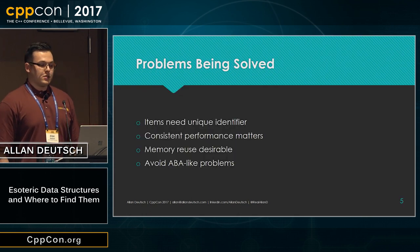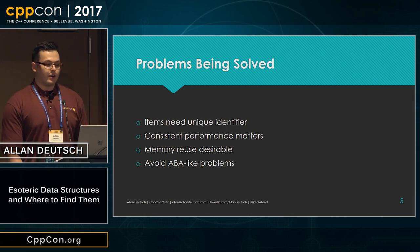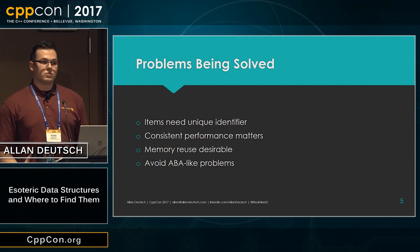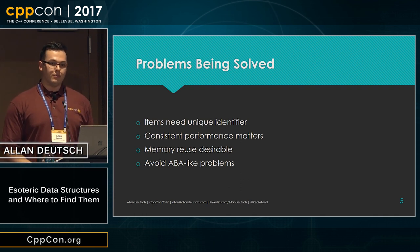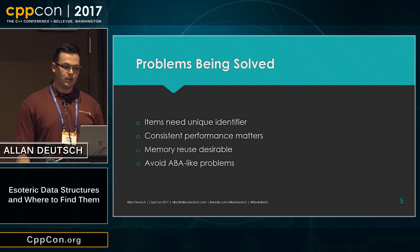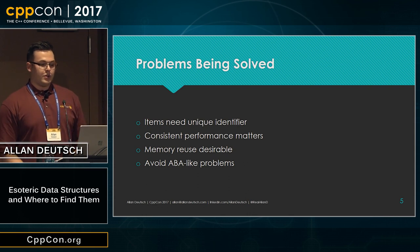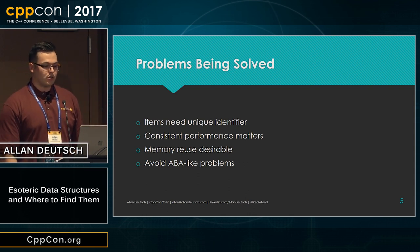The problems being solved by a slot map are that you have some items that need unique identifiers, and you have to have consistent performance. This is specifically from games — we have a very tight time schedule and it needs to be consistent for a pleasant user experience. Making sure that we don't have amortized costs that could spike unexpectedly is desirable. We also get to reuse memory so that we don't have to do lots of allocations and deallocations.